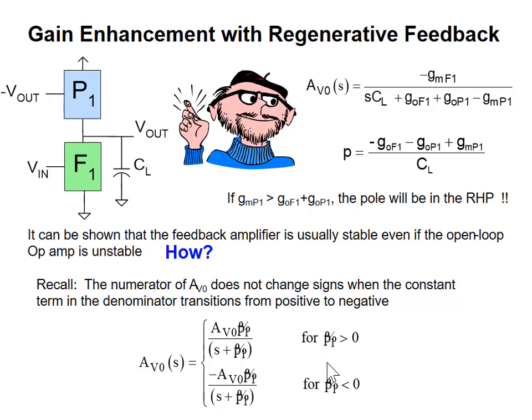So the voltage gain of the structure — since it doesn't change — the gain doesn't change signs at DC. It's AB0 times the pole over S plus the pole for the pole positive. And it's minus AB0 times the pole over S plus the pole for the pole negative.